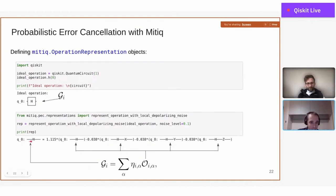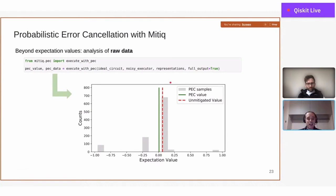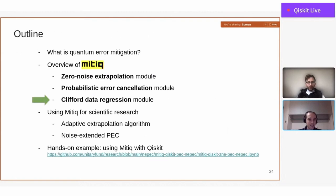This can be printed, and you get exactly this type of expression where you have the Hadamard gate expressed as a linear combination of noisy gates. This is the way in which you can apply PEC. After you have these representations, you call the function execute with PEC and you get directly the result that you want. Together with this, you also get all the additional data of the process that you can analyze and plot. This was an overview of PEC.